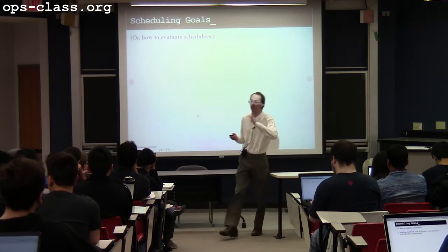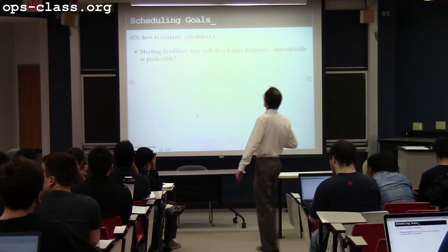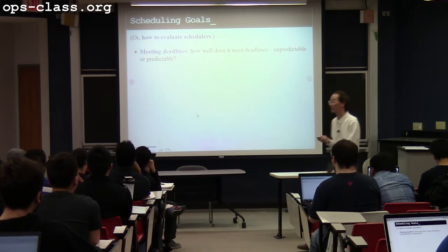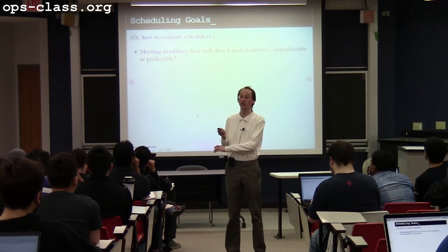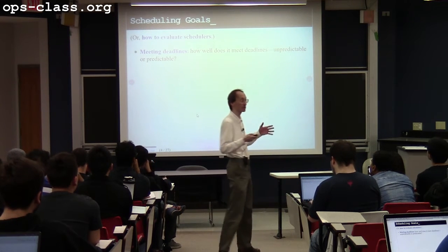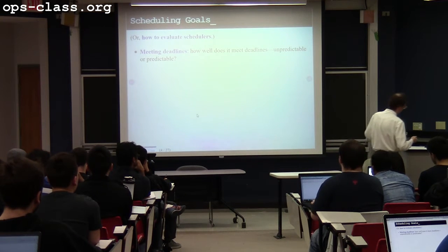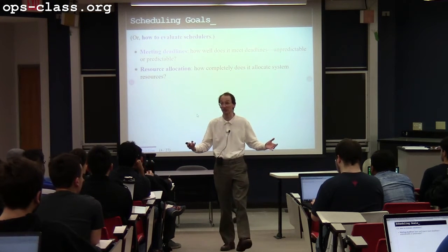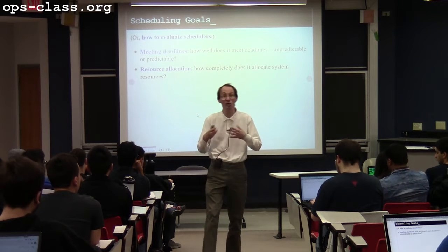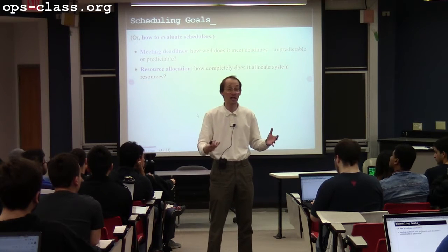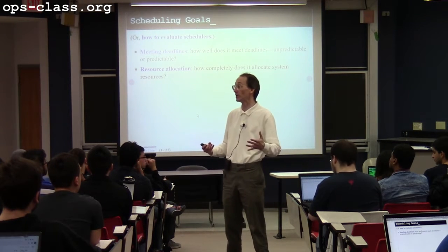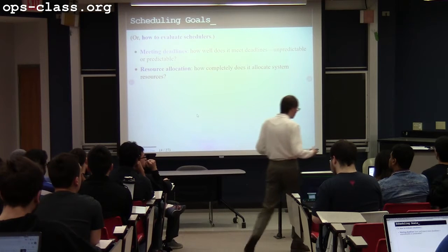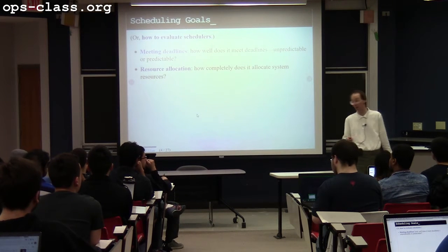Scheduling goals — to recapitulate: we want something that works. We want to meet deadlines and we don't want to starve things out. Just because something is a priority doesn't mean non-priority tasks should fall off the face of the earth — but things that are priorities should get prioritized. Resource allocation: we want to make sure the CPU is booked as much as possible, the disk drive is booked as much as possible, and that we're responsive to the user. These are conflicting goals, and that's one of the aims of the scheduler — to sort out those conflicts.